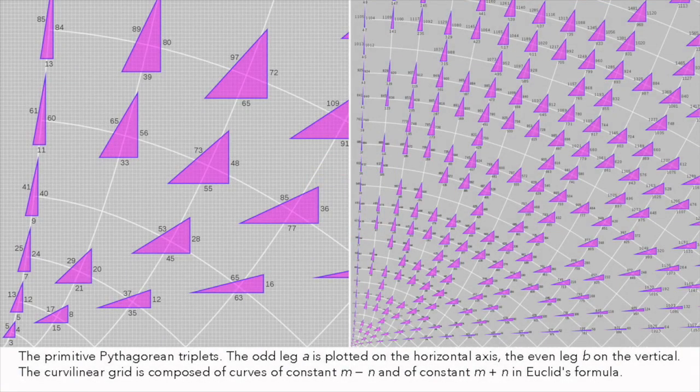Examples of Pythagorean triplets include 3-4-5, 5-12-13, and 7-24-25.